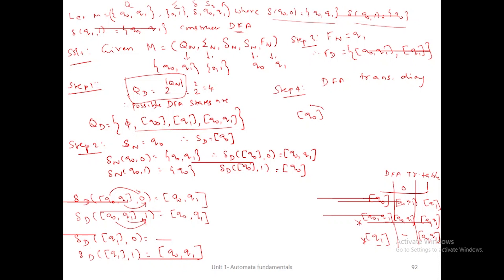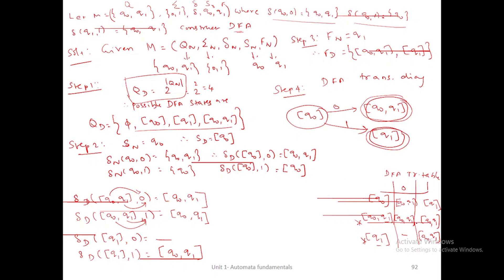Then step 4: draw the DFA transition diagram. The initial state is [q0]. On input 0, it goes to [q0,q1]. On input 1, it goes to [q1]. The second and third states are marked as star — these two are final states, so they should be mentioned with double circles. For [q0,q1], the same answer is available for both 0 and 1, so I put only a single path with two values. From [q1], it goes to [q0,q1] with input 1. The answer of NFA can contain more than one output state, but the answer of DFA contains only a single output state. Next I give the shortcut method for NFA to DFA conversion without using these steps — it is only for understanding, but in your exam you should write these steps only.